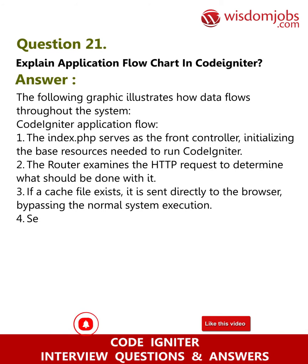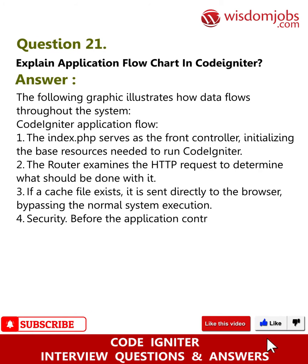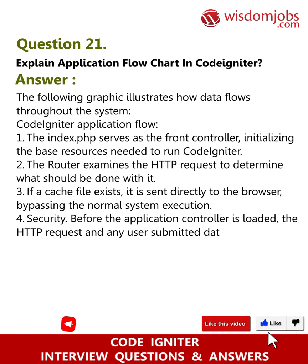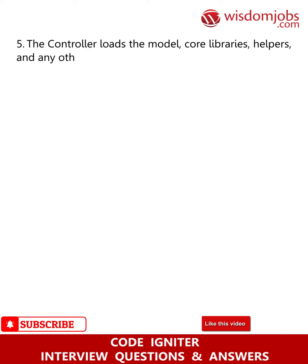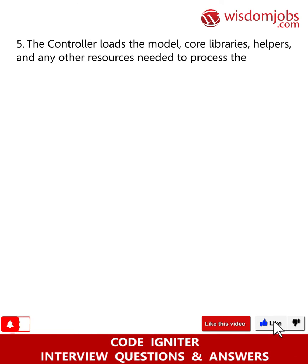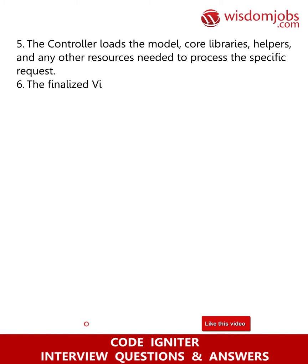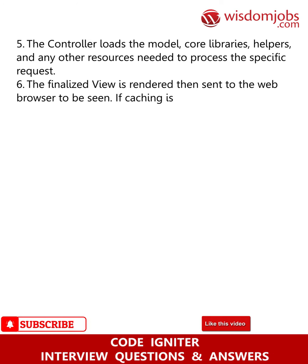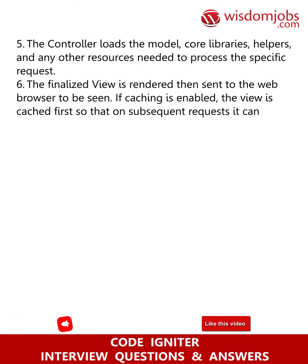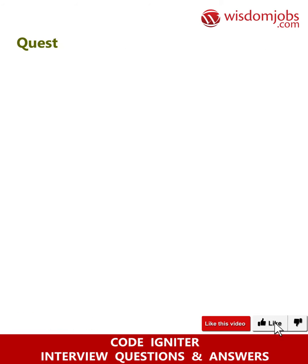Continuing the CodeIgniter application flow: Four — before the application controller is loaded, the HTTP request and any user-submitted data is filtered for security. Five — the controller loads the model, core libraries, helpers, and any other resources needed to process the specific request. Six — the finalized view is rendered and sent to the web browser. If caching is enabled, the view is cached first so that on subsequent requests it can be served.